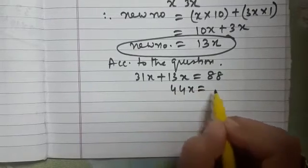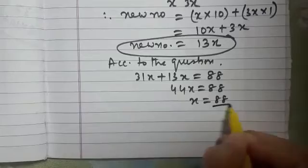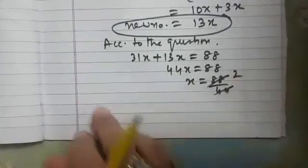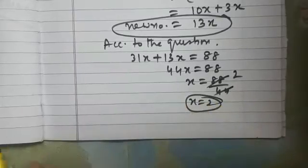That means 44x is equal to 88. So what is x? Good. x comes out to be 2. x is 2.